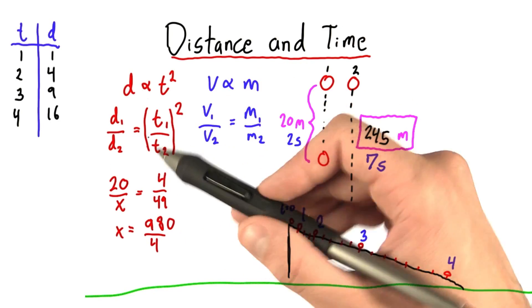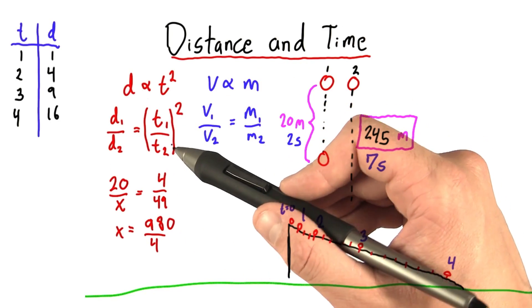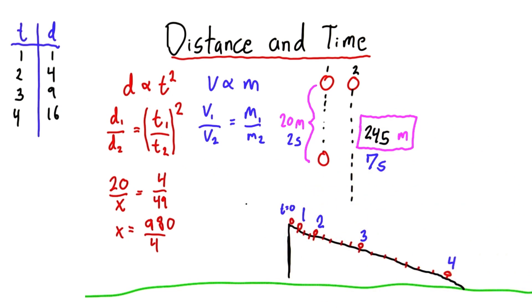Now solving problems using ratios and geometry is something that was very popular in the time of Galileo. Today it's more common to see equations. Isn't that right, professor?